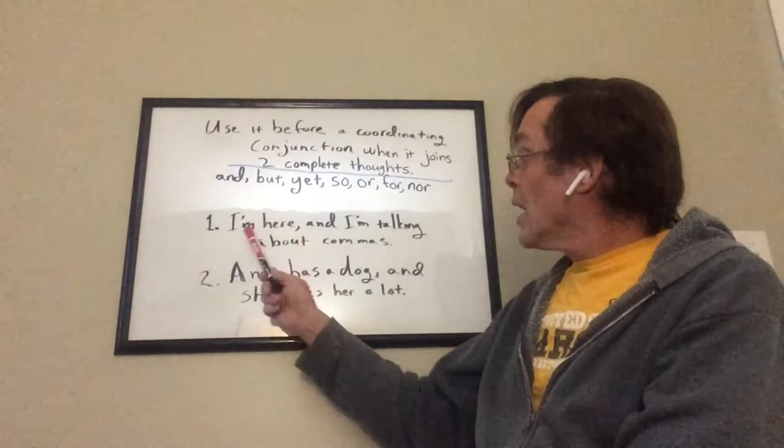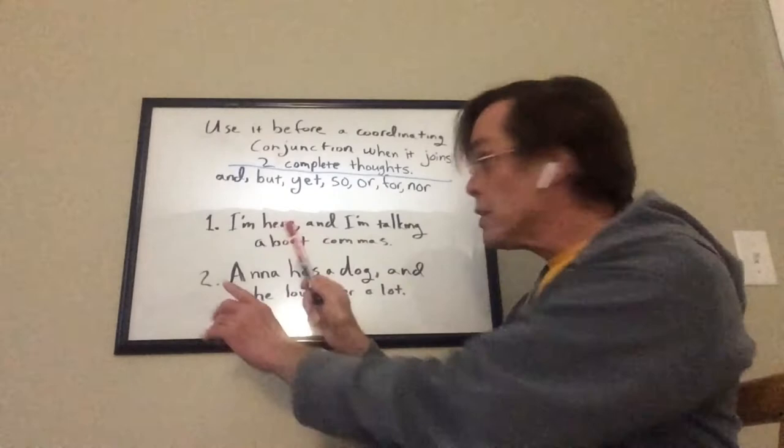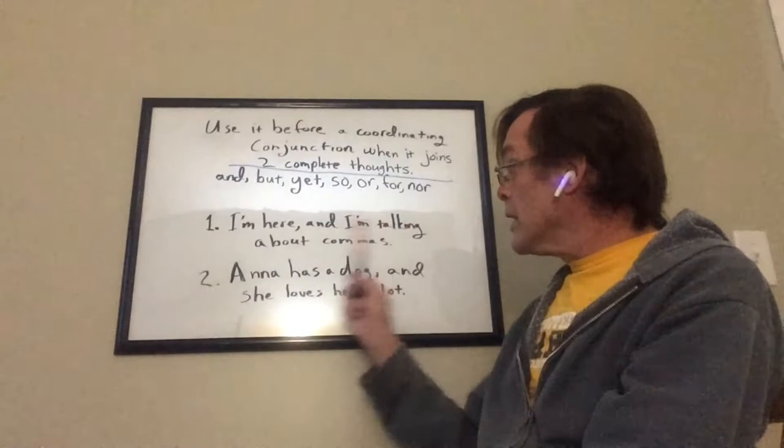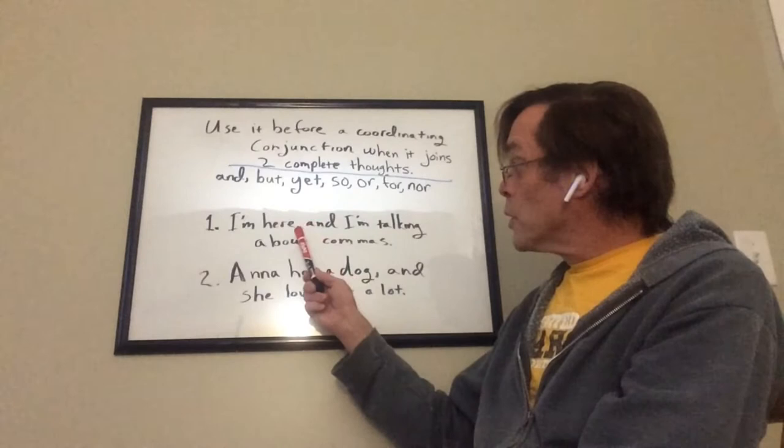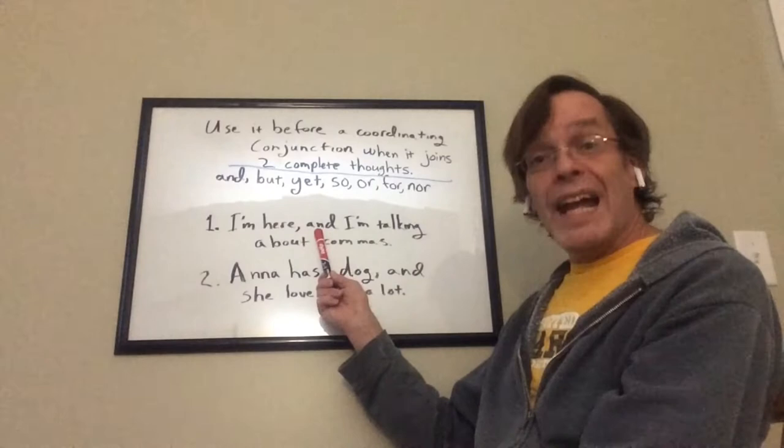And here's an example of how you could use them: I'm here and I'm talking about commas. These are two separate thoughts. 'I'm here' — that's one thought. 'I'm talking about commas' — that's the second complete thought. So they're joined with the comma that's separating them and the word 'and.'